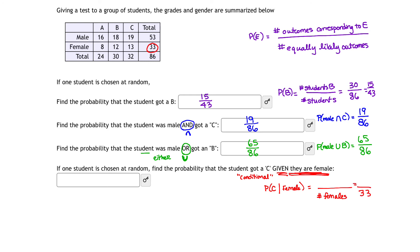We're told the student is female, so we're restricting our set of possible students. Given that we're in the female category, what is the probability that the student received a C? There's only one place where that occurs: the female students who received a C. The number of C's given they were female is 13. There are 13 students who are female and received a C, so the probability is 13 over 33.